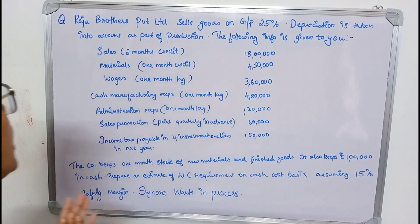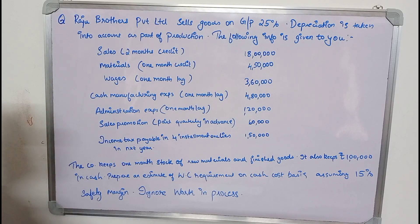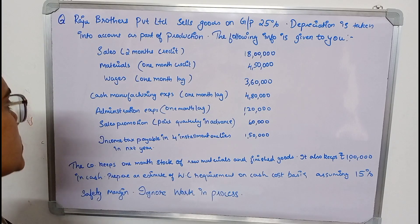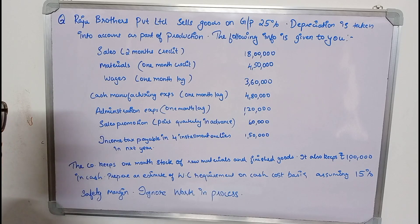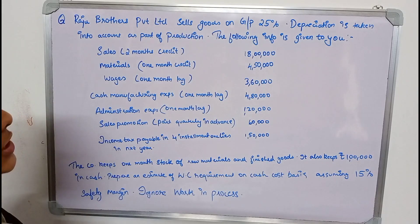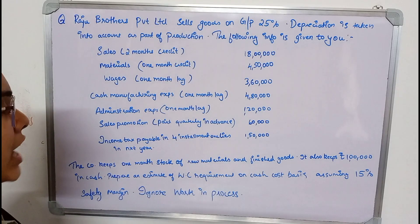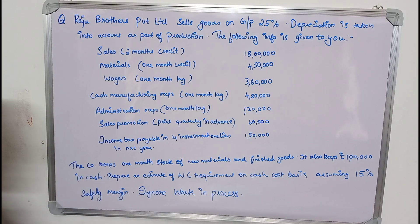The question: Raja Brothers Private Limited sells goods on a gross profit of 25%. Depreciation is taken into account as part of production. The following information is given — sales: two months credit, 18 lakh; materials: one month credit, 4 lakh 50 thousand; wages: one month, 3 lakh 60 thousand; cash manufacturing expense: one month, 4 lakh 80 thousand; administration expense: one month, 1 lakh 20 thousand; sales promotion paid quarterly in advance: 60 thousand; income tax payable in four installments next year: 1 lakh 50 thousand. The company keeps one month stock of raw materials and finished goods, and also keeps 1 lakh in cash. Prepare an estimate of working capital requirement on cash cost basis, assuming a 15% safety margin. Ignore work in process.